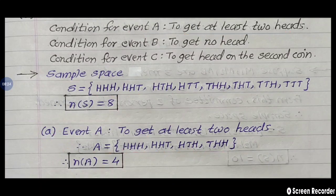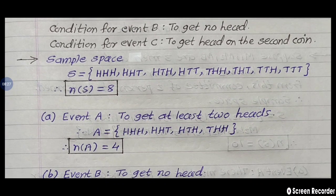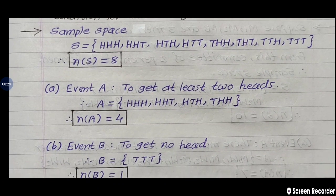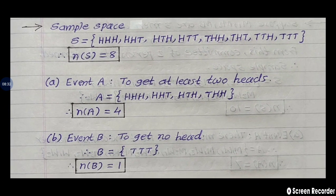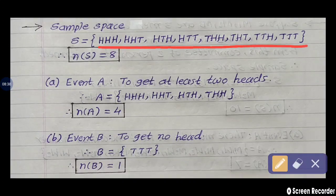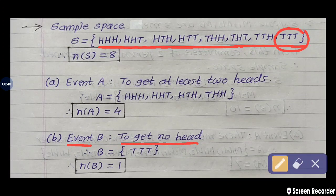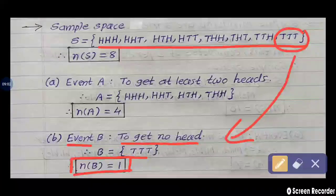The second event is given: to get no head — we do not require any head. In those eight sample points, we require no head in any sample point. The answer is the last sample point T-T-T, in which no head is present. So event B equals {T-T-T}, and N of B contains only one sample point.